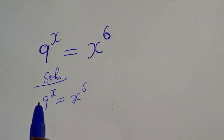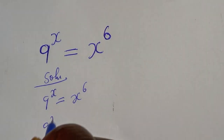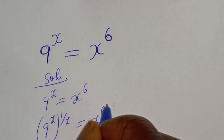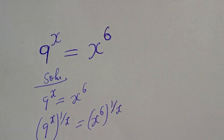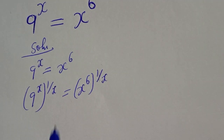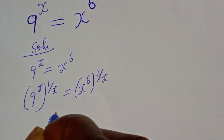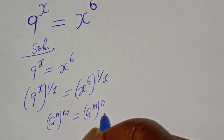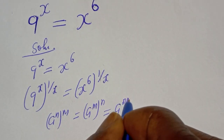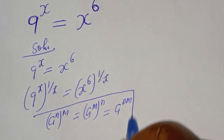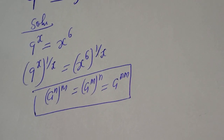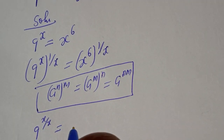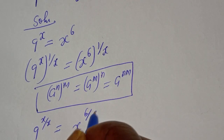Now let's multiply the exponent of both sides by 1 over s. So 9 raised to power s, to the power of 1 over s, is equal to s raised to power 6 to the power of 1 over s. If you have a raised to power n to the power of m, this is equal to a raised to power n times m. Then here we get 9 raised to power x over s is equal to s raised to power 6 over s.